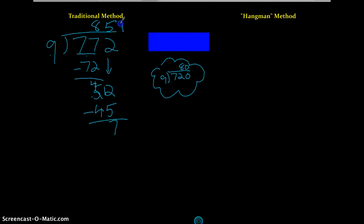There's nothing else to bring down, so I've got an 85 remainder 7. Most people understood that. It can get a little bit confusing because there's a lot of steps to remember. So let me show you the hangman version.